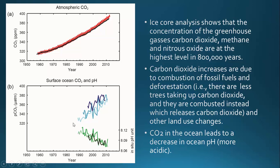What does this mean for the ocean? This is another graph from the IPCC report showing that as we increase the amount of carbon dioxide in the atmosphere, we are decreasing the pH of the oceans. That carbon dioxide goes into the water, where it equilibrates with carbonic acid. Carbonic acid in the oceans causes the pH to decrease and become more acidic, which is harmful to aquatic organisms living in the ocean.